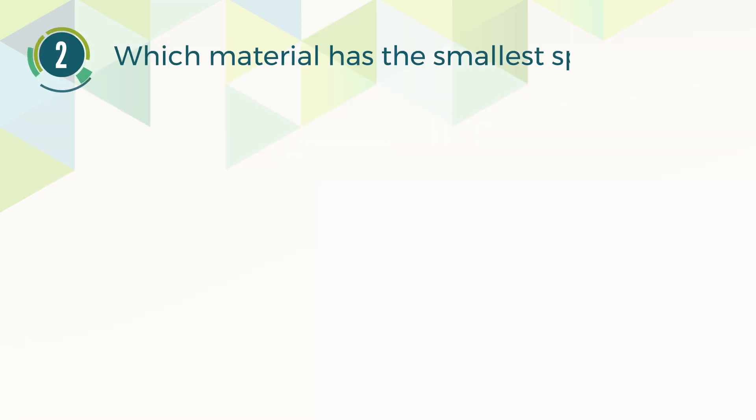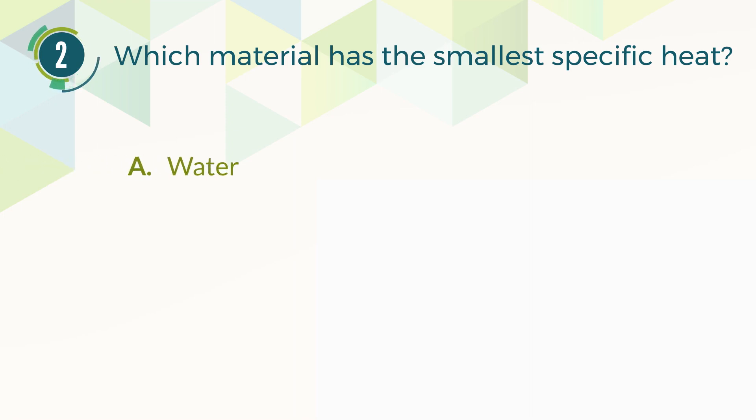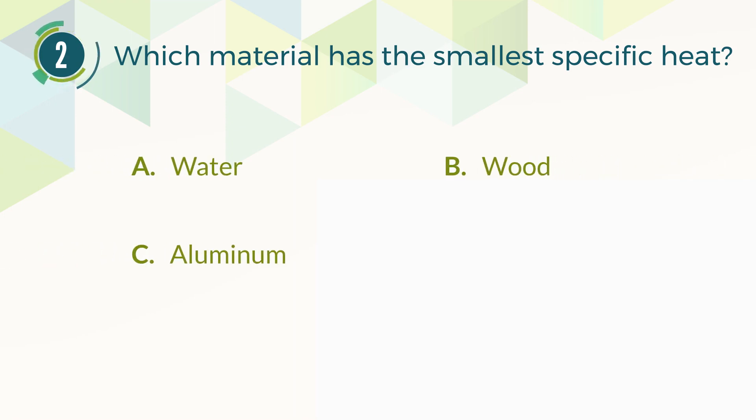Number 2. Which material has the smallest specific heat? A. Water. B. Wood. C. Aluminum. D. Glass.